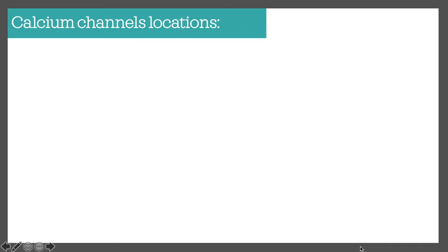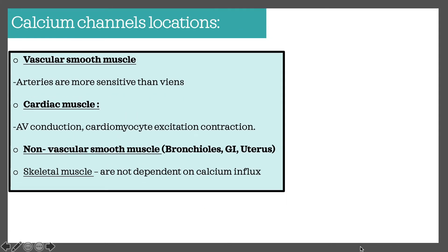Regarding calcium channel locations, the L-type calcium channels are found in vascular smooth muscles — arteries are more usually sensitive than veins — cardiac muscle, and they are involved with AV conduction as well as cardiomyocyte excitation. Non-vascular smooth muscles include bronchioles, gastrointestinal tract muscles that cause peristalsis, and the uterus, involved in uterine contractions during pregnancy.